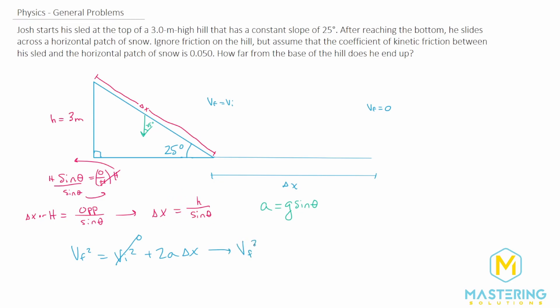So v final squared is equal to two times the acceleration, which we said is g sine theta times the delta x, which we said is h divided by sine of theta.